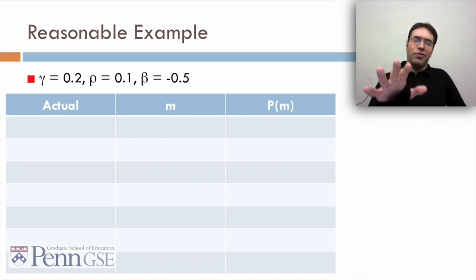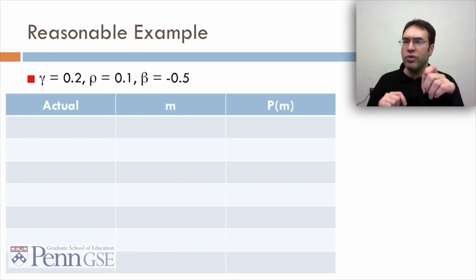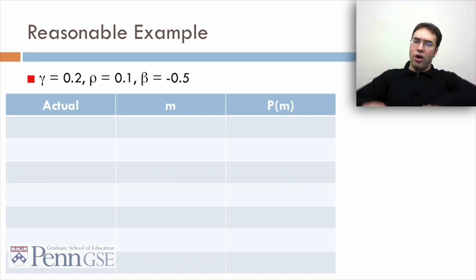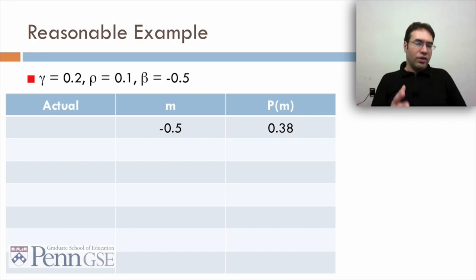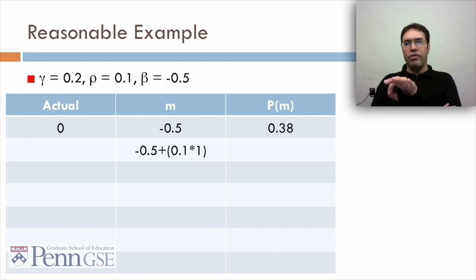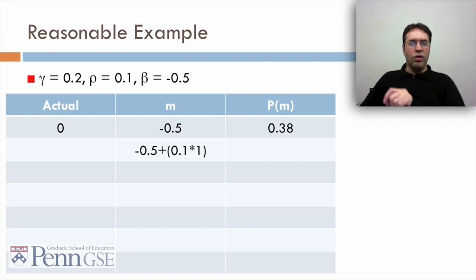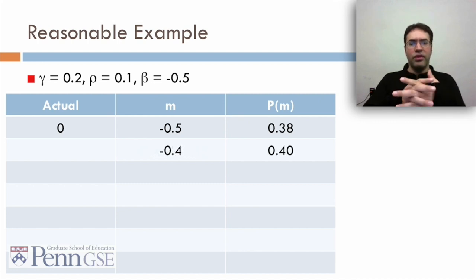So let's look at an example. We'll start first with a reasonable example. Let's say that you have gamma of 0.2, rho of 0.1, so we're assuming that you improve your future performance double if you get success compared to if you get a failure. And beta is negative 0.5, which means the item is a little hard. So the initial m, there's no successes or failures yet, is going to be negative 0.5, that's the beta, so the probability the student will get it right on the first attempt is 0.38.